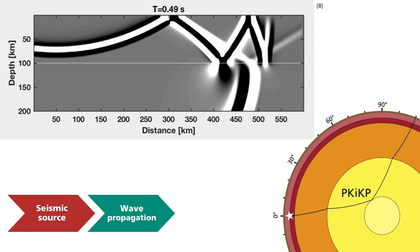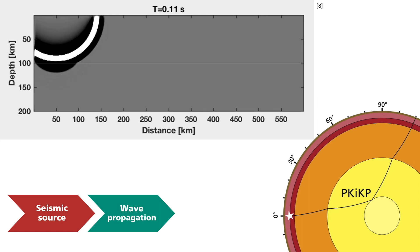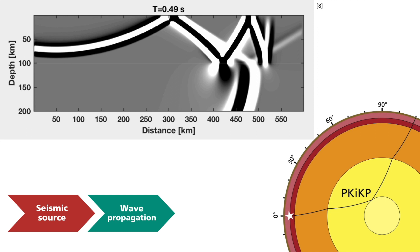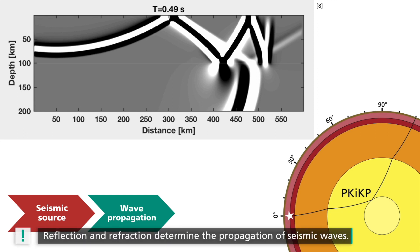You can initially see the radially symmetric wave propagation. Then the waves will be refracted and reflected at the layer boundary. The superposition of waves generated this way already produces a very complex wave field. Reflection and refraction determine the propagation of the seismic waves.